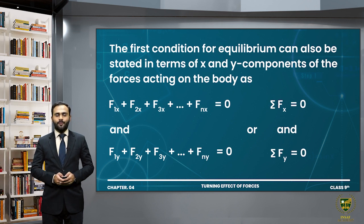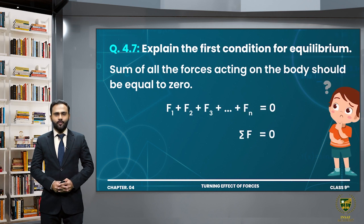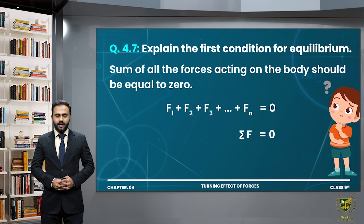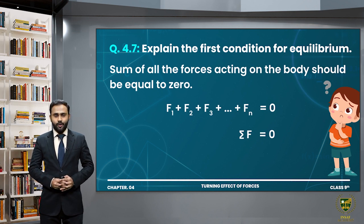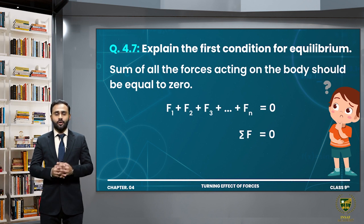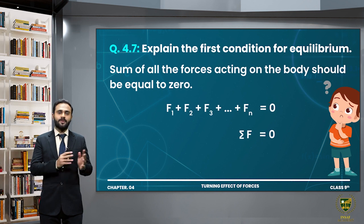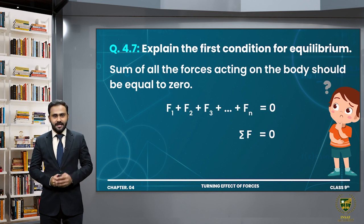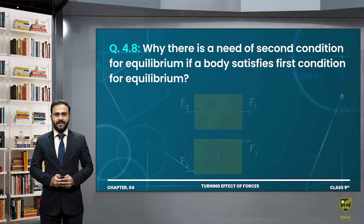Question 4.7: Explain the first condition for equilibrium. The first condition of equilibrium is that the sum of all the forces acting on the body is zero — that is, ΣF = 0. You need to explain this thoroughly as discussed in the lecture.